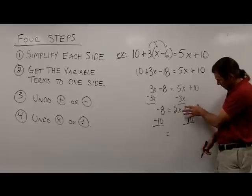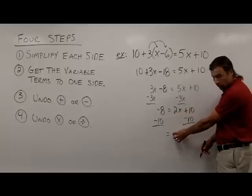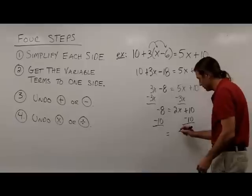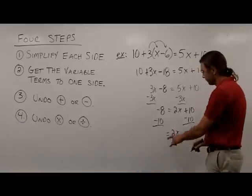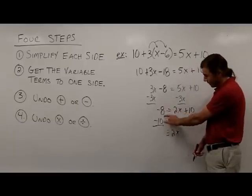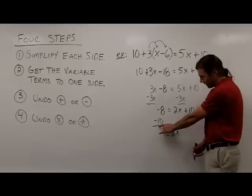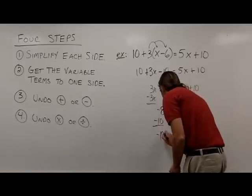Over here on the right side, that's going to give me 0, so all I have left is this 2x. On the left side, I have a negative 8 plus a negative 10, which gives me negative 18.